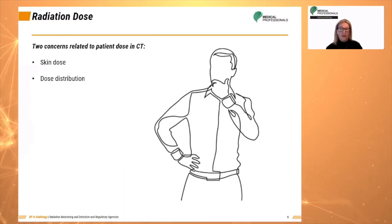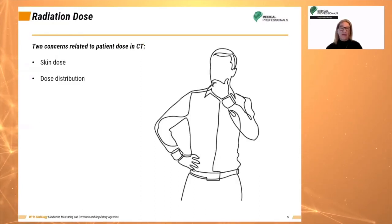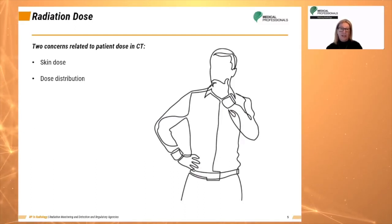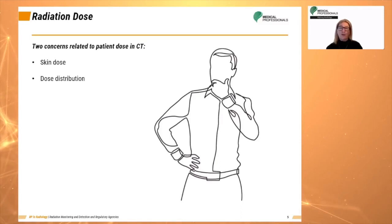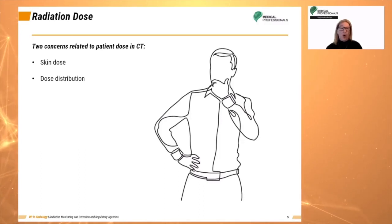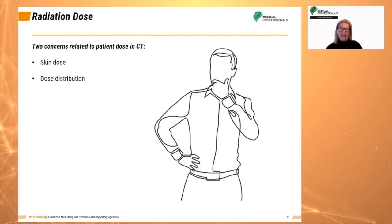First of all, the dose distribution inside the patient is completely different than that for a conventional radiograph. In conventional radiography, the dose decreases continuously from the entrance of the x-ray beam to its exit, with a ratio of between 100 to 1000 to 1. In CT, as a consequence of the scanning procedure that equally irradiates the patient from all directions, the dose is almost equally distributed in the scanning plane.